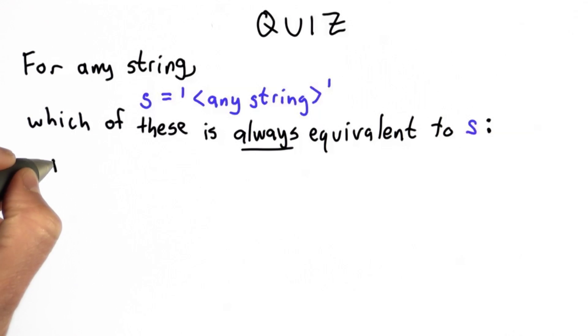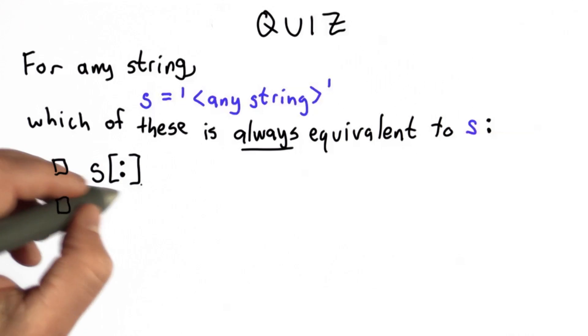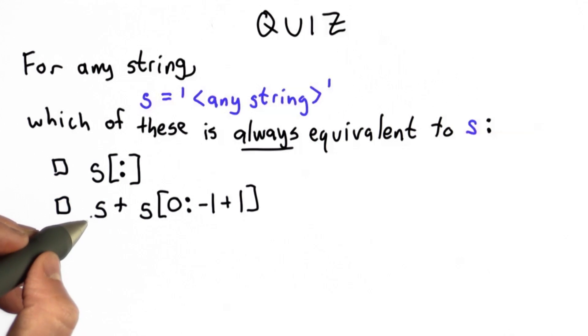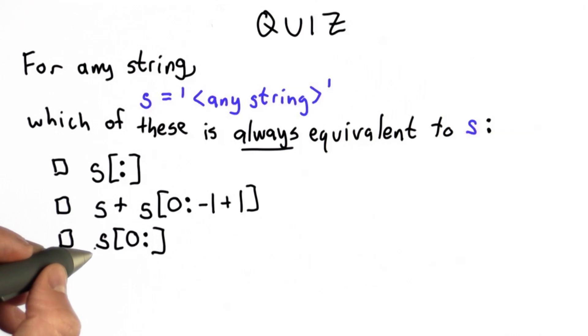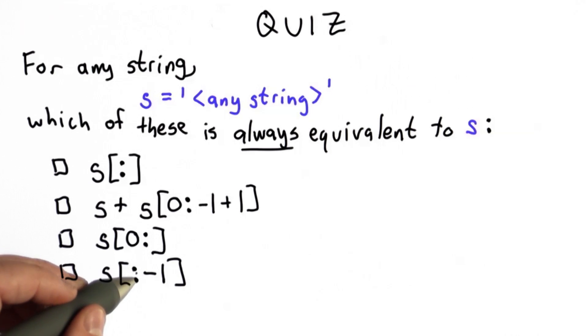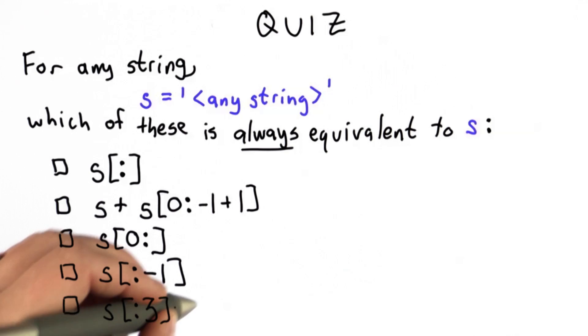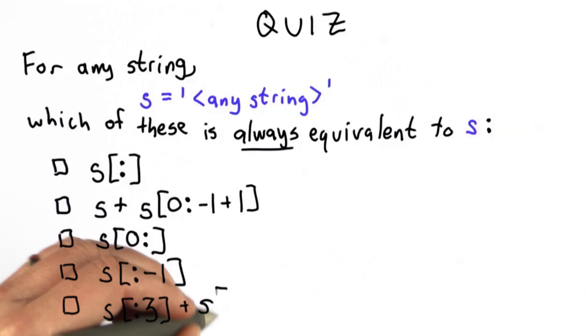So here are the choices. We have s[:]. We have s concatenated with s[0:-1+1]. We have s[0:]. We have s[:-1]. And we have s[:3] + s[3:].